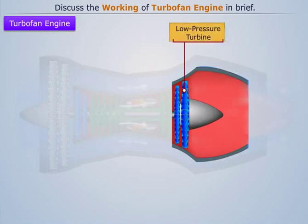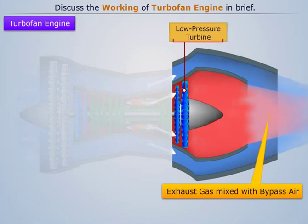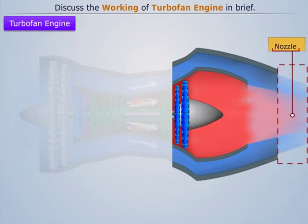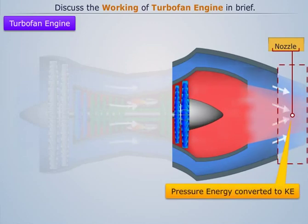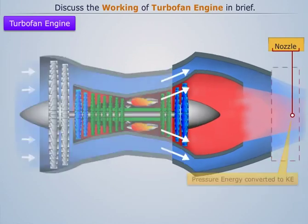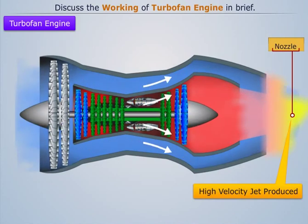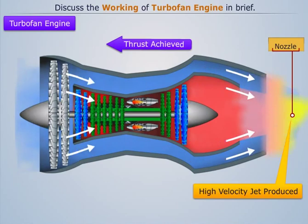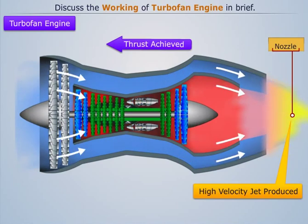The exhaust gas from the low pressure turbine then moves forward, where it gets mixed with the bypass air. This mixture then proceeds into the nozzle and expands, where all its pressure energy is converted into kinetic energy, and a very high velocity jet is produced, which provides forward motion to the aircraft. This exhaust gas then discharges into the atmosphere, thereby completing the cycle.